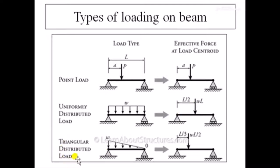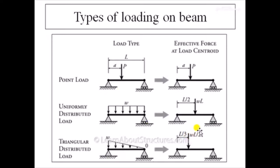In the case of a triangular distributed load, the intensity at one edge is W and at the other edge is 0, decreasing gradually in triangular form. The effective force acts at the centroid of this triangle, which is at a distance of L/3 from the left and 2L/3 from the right end. The intensity of the effective load is half × base × height = ½ × L × W = WL/2. For our practical today, we are going to deal only with the point load, so let us move towards the practical.